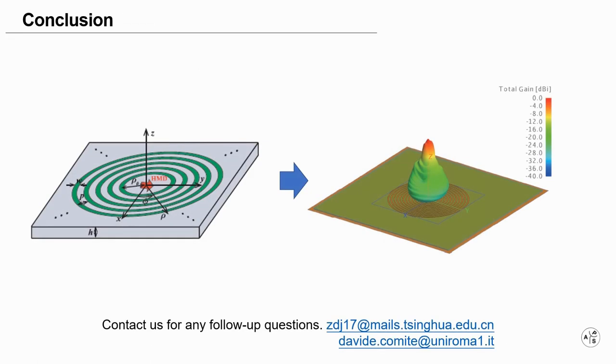This confirms the generality of the adopted approach. We believe this work sheds new light on the nature of the general class of radially periodic structures, which are very interesting as they can provide high gain broadside radiation with simple and planar structures.